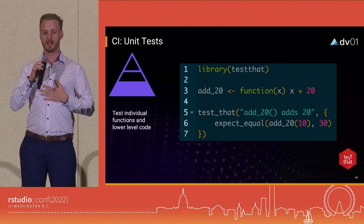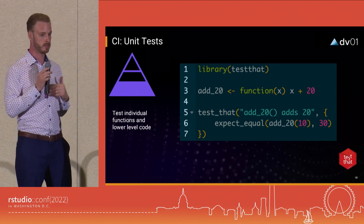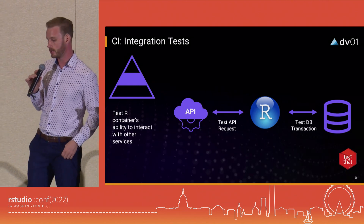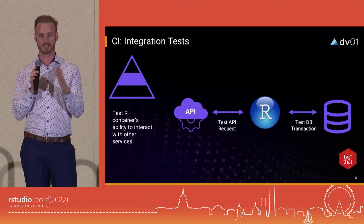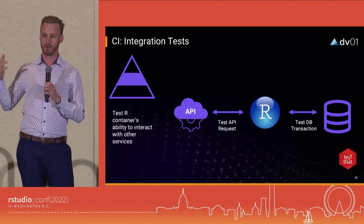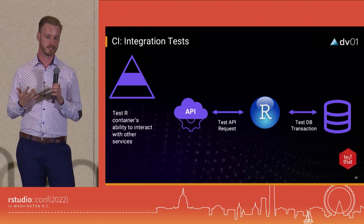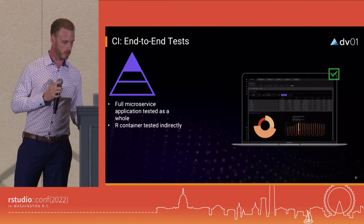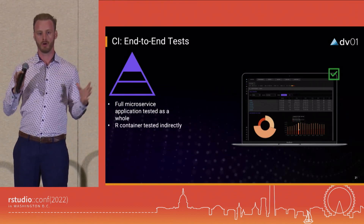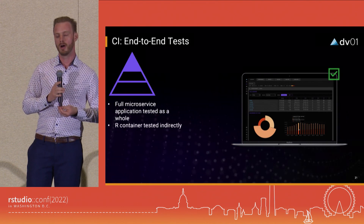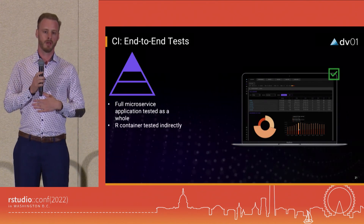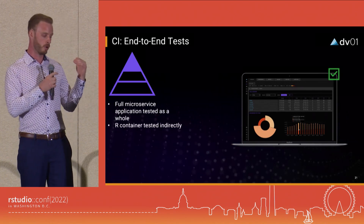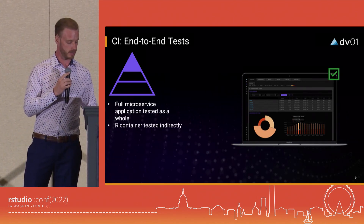Writing many unit tests allows you to make sure your code doesn't break in unexpected ways and helps you identify failures. For integration tests, the goal is to make sure our microservice can interact with other services it needs — databases or APIs. We write tests to ensure our R container can interact with every service it requires. Finally, end-to-end tests look at the whole microservices application as a whole — our entire web app. They don't tell us much specifically about our R microservice, but they give a holistic view. The useful input about our R package comes from the two previous test categories.